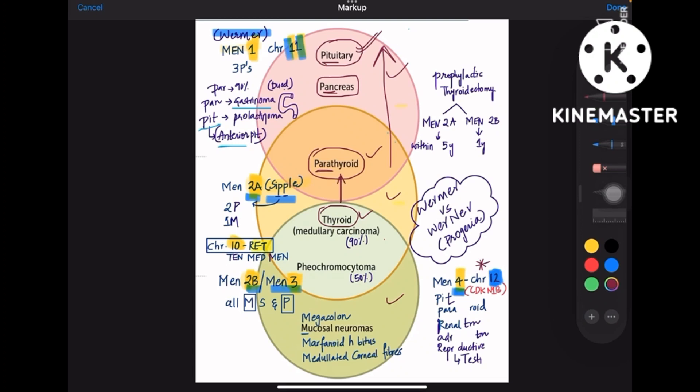You can also remember it like para-pan-pit in this order. Like towards upside you have to write para, pan, and pit. This is the mnemonic given in First Aid.